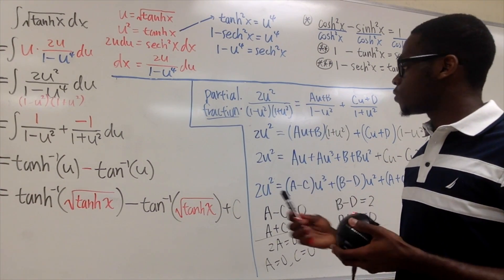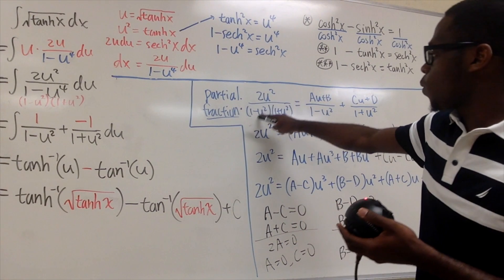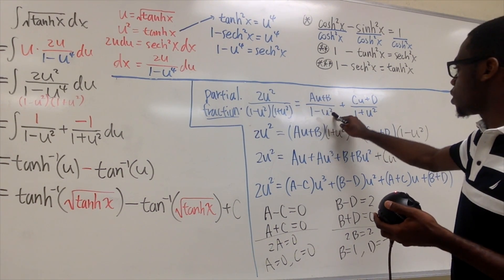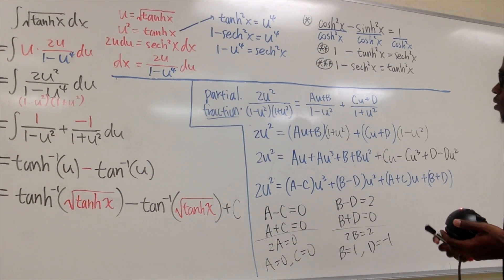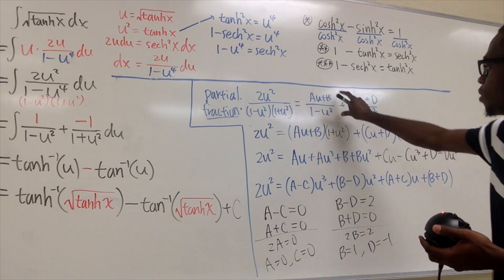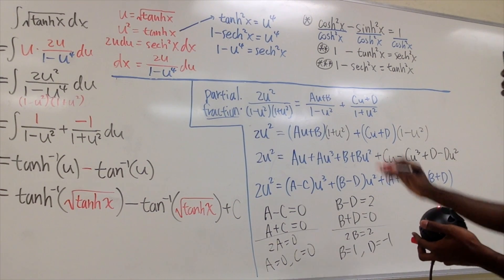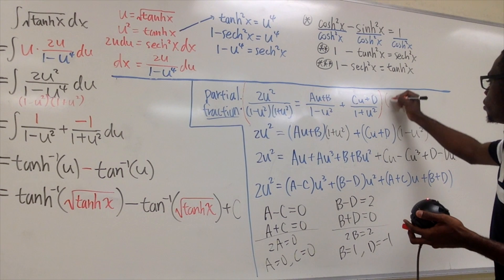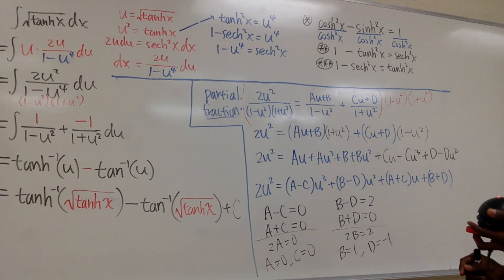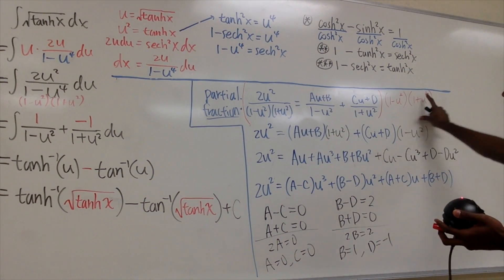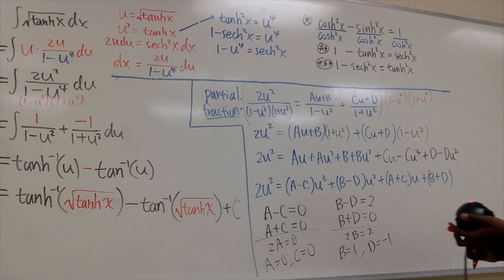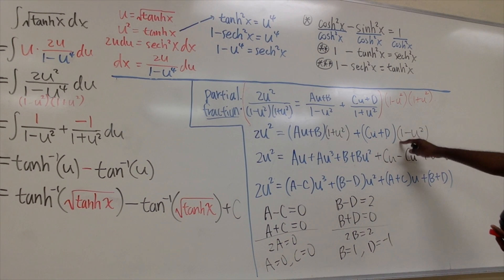Now we use partial fractions. We write 2u² / [(1 − u²)(1 + u²)] = (Au + B) / (1 − u²) + (Cu + D) / (1 + u²). Notice the numerators are linear because the denominators are quadratic — that applies to both cases. Multiplying everything by the LCD (1 − u²)(1 + u²): the left side gives 2u², the first term gives (Au + B)(1 + u²), and the second gives (Cu + D)(1 − u²).